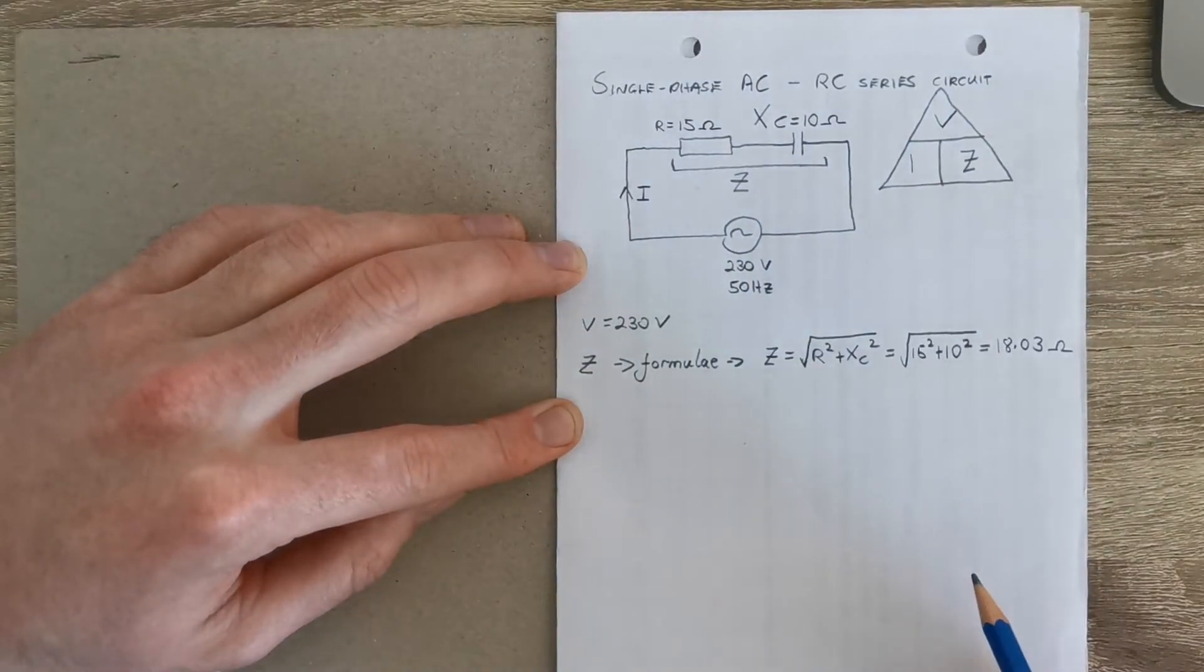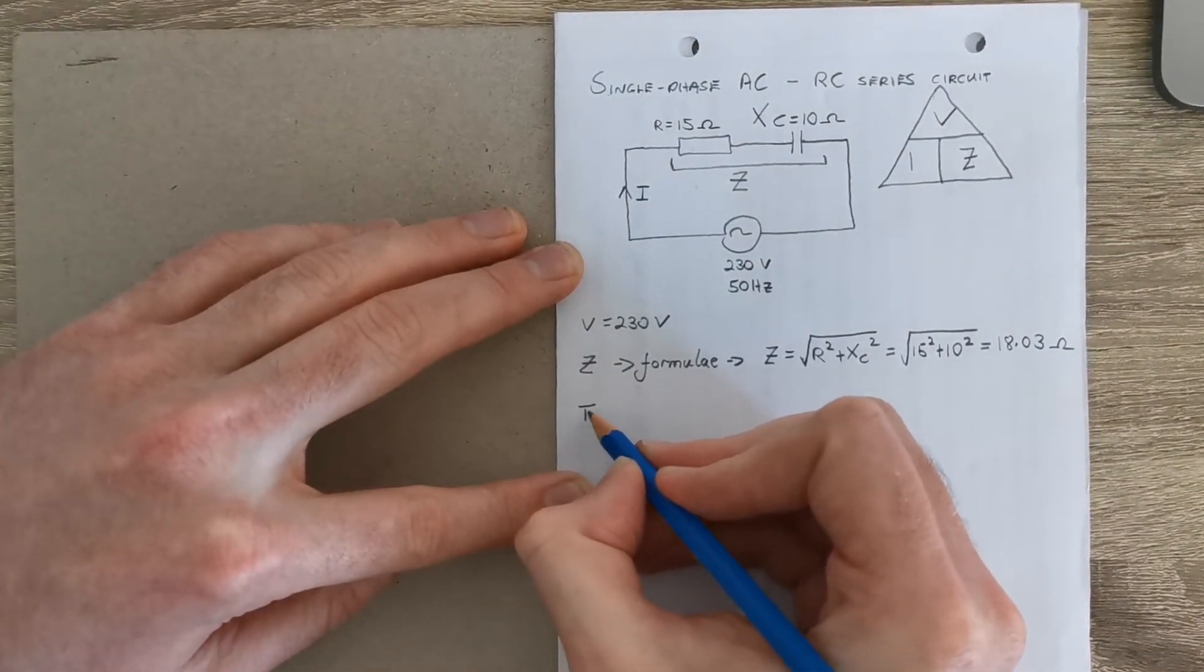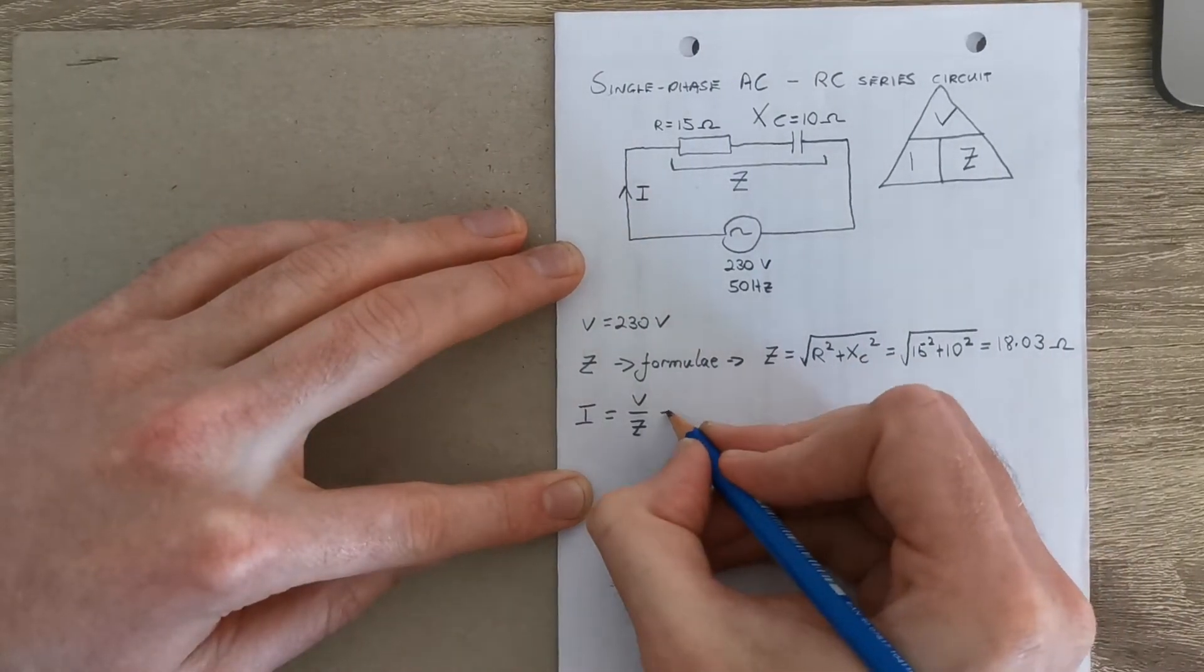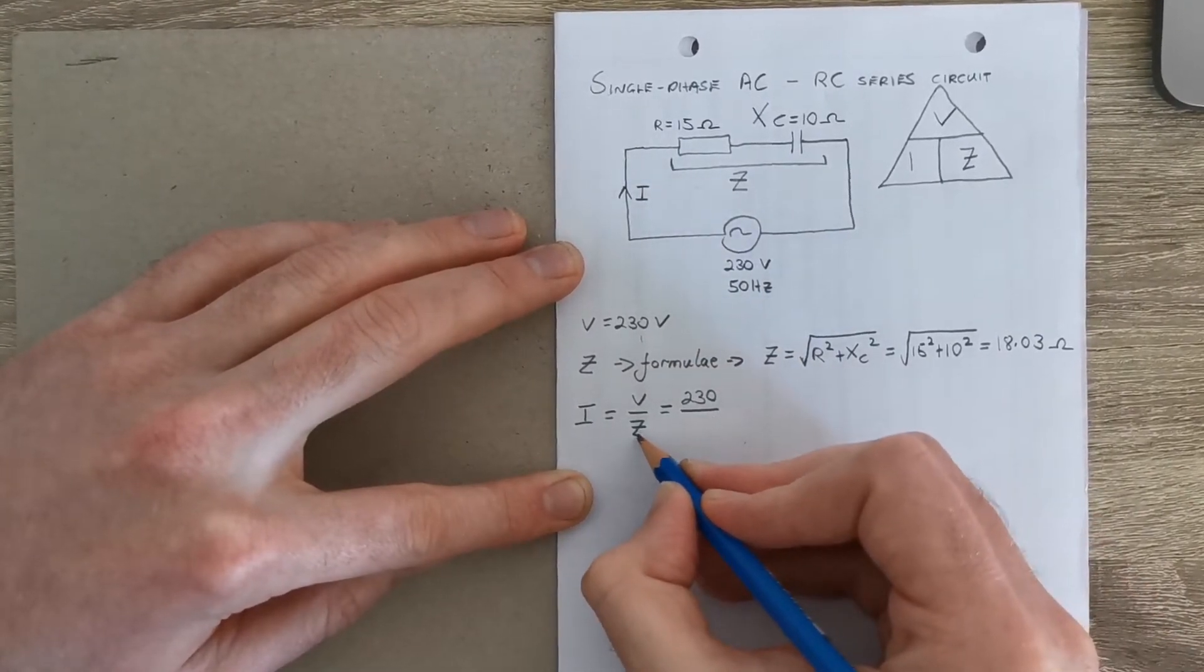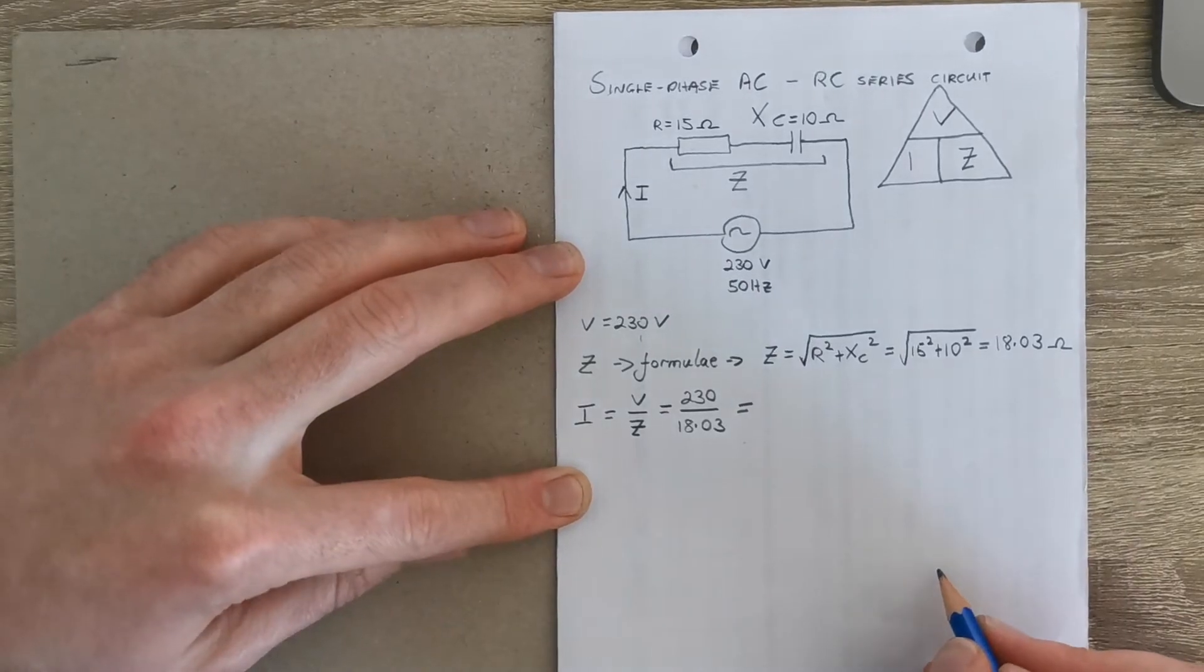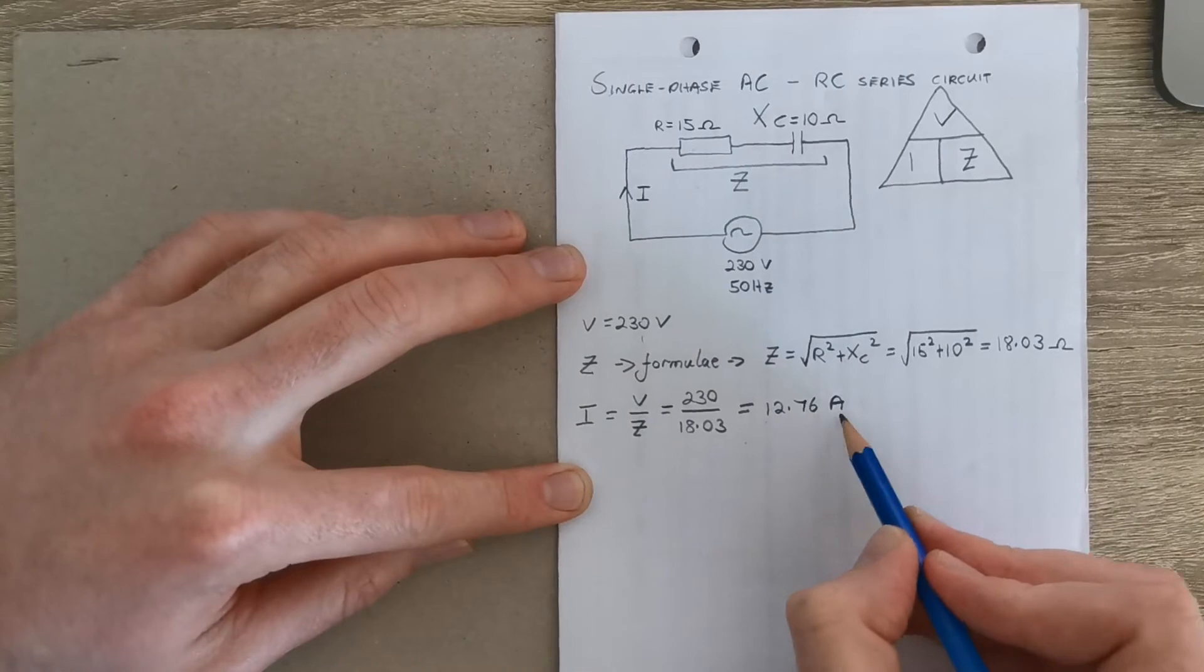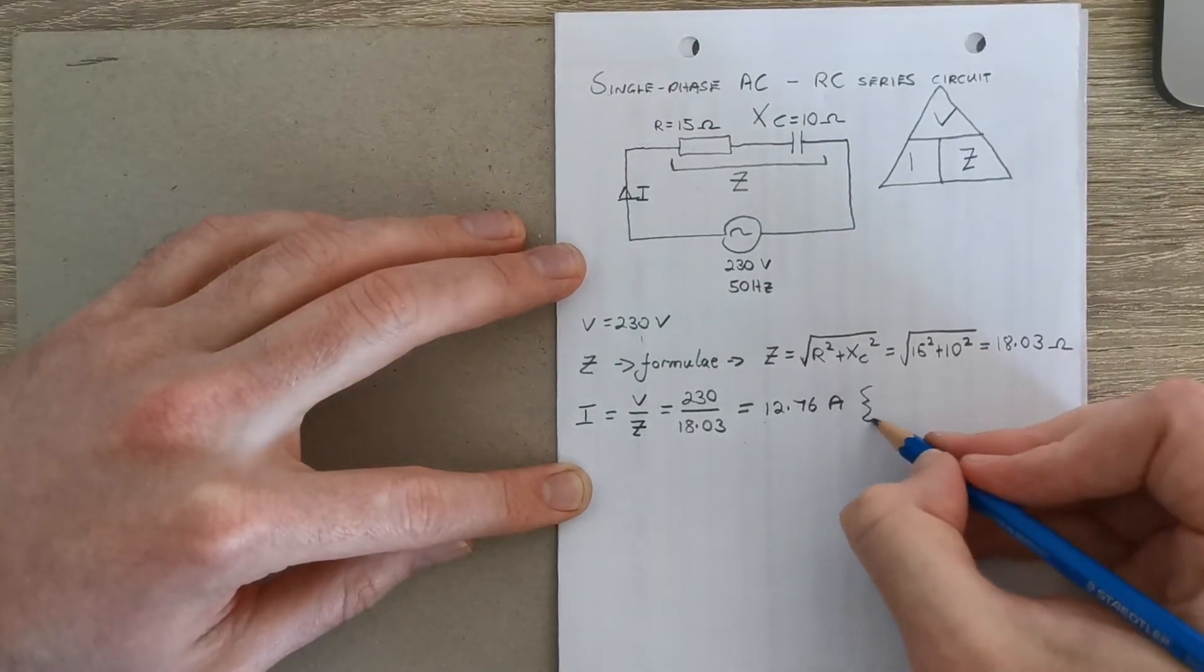So that's the magnitude of the impedance for these two components, our resistor and our capacitor in series. So now we want to get the magnitude of the current I, just using Ohm's law, it'll be voltage over impedance. So we have our voltage, it's 230, over the magnitude of our impedance, 18.03 ohms. We stick this into our calculator and you should get out 12.76 amps. So that there is the size or the magnitude of the current flowing in the circuit.